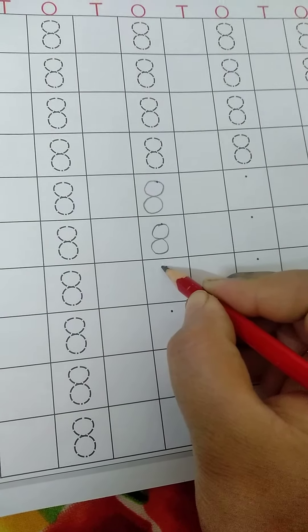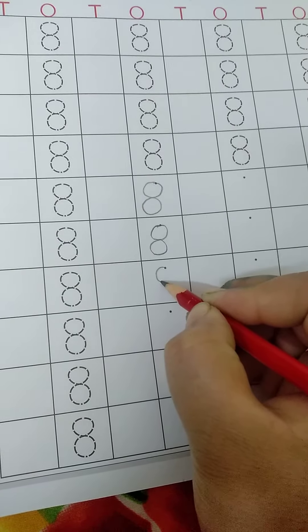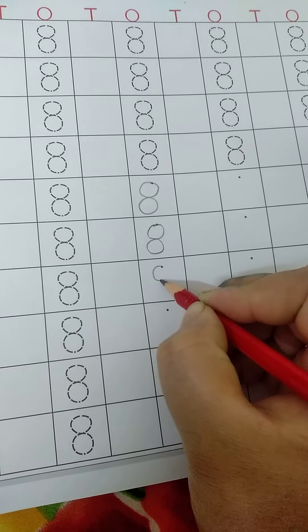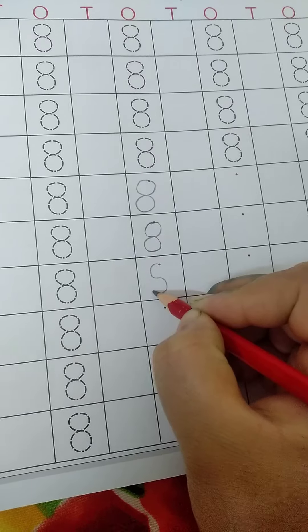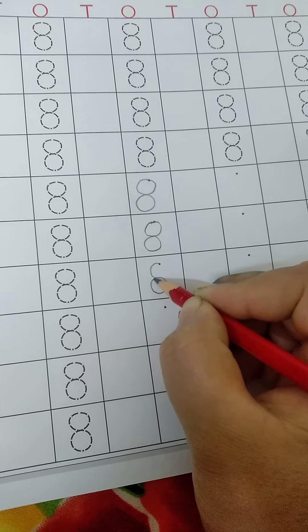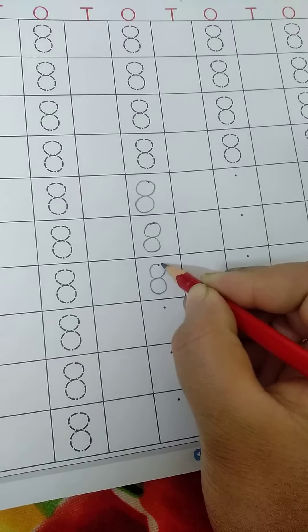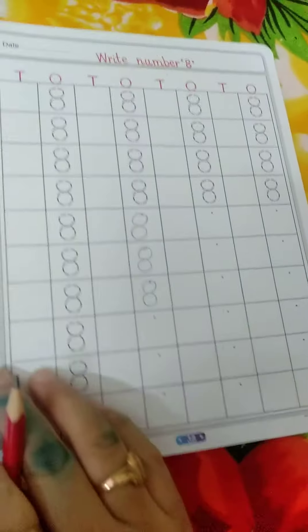Again, write 8. Left curve down, right curve down. Okay children.